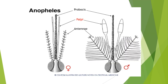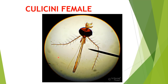In Anopheles female mosquito, the antennae are less bushy, proboscis and palpi are of somewhat equal length. In Anopheles male, antennae are more bushy, and the ends of the maxillary palpi are club-shaped, but in the case of female Anopheles, these are plain. In Culicine female, the maxillary palpi are shorter than the proboscis, and antennae are less bushy.